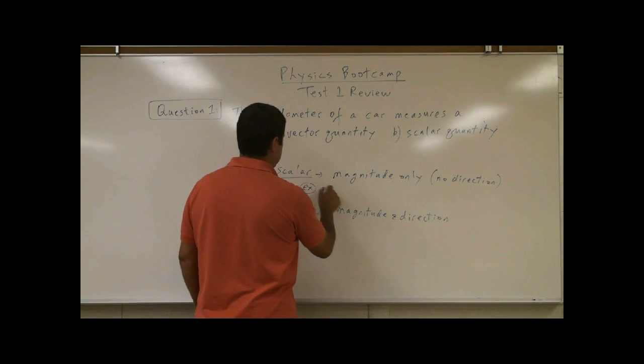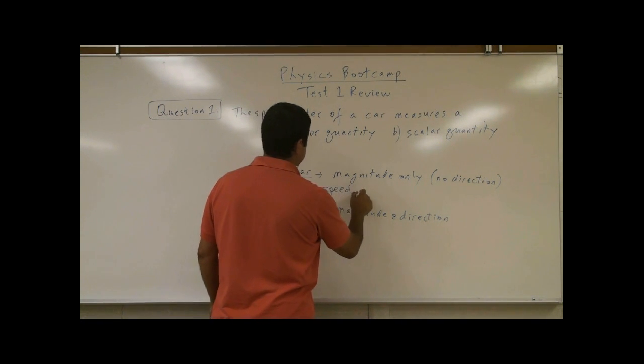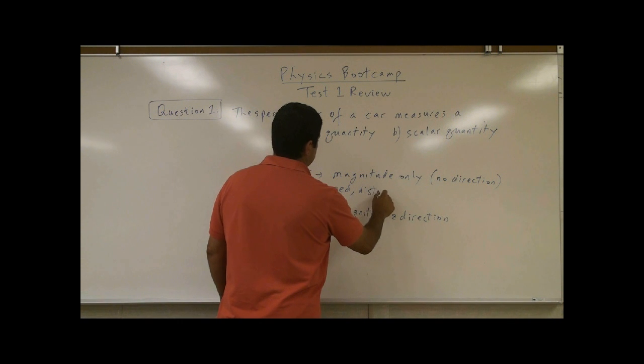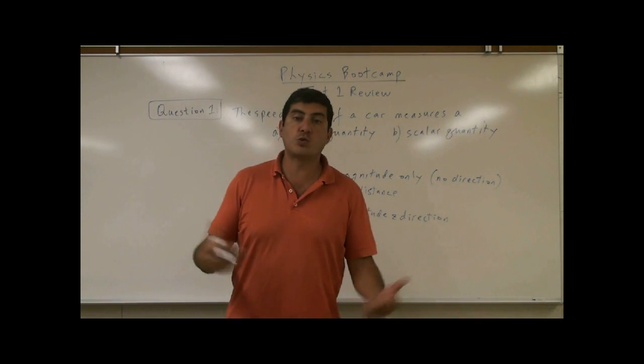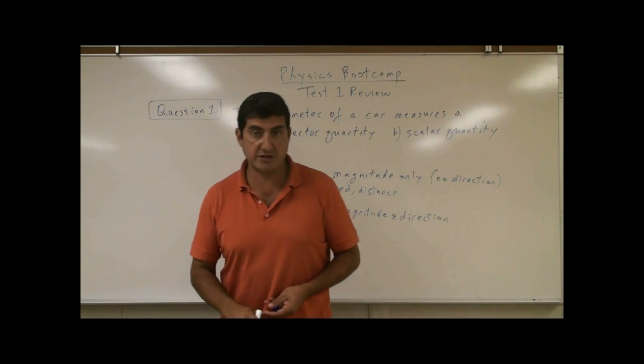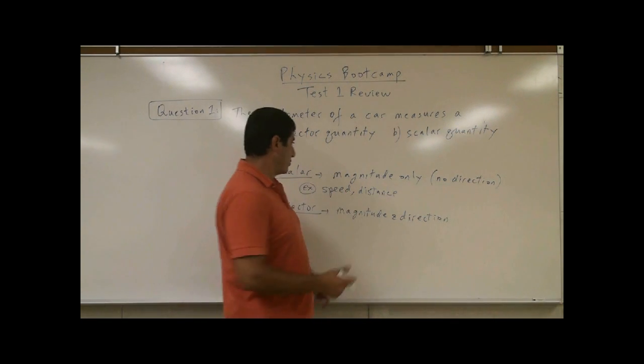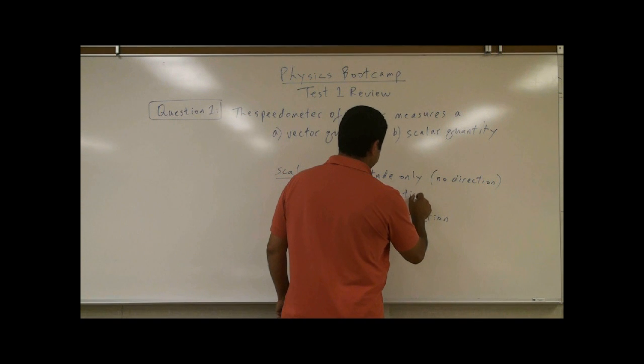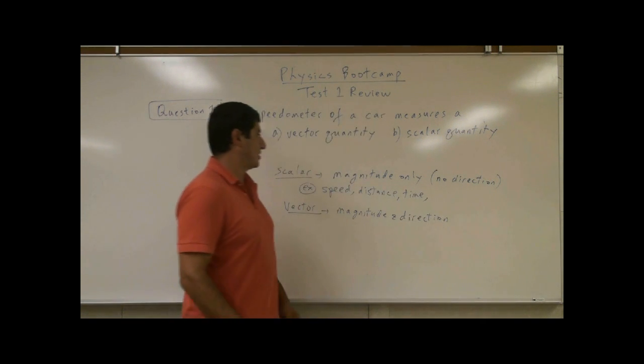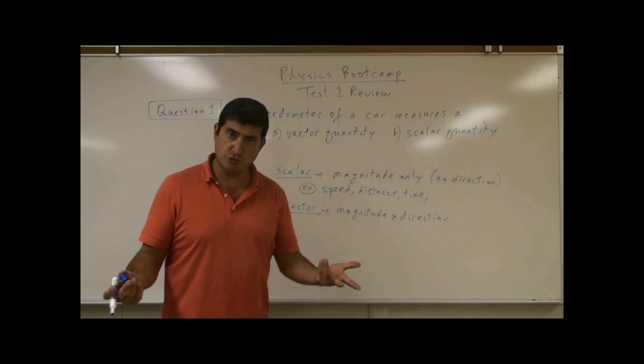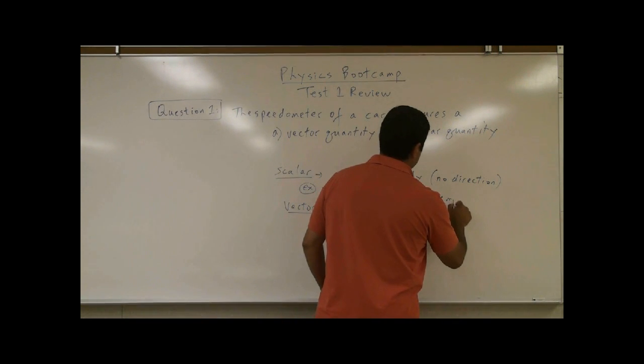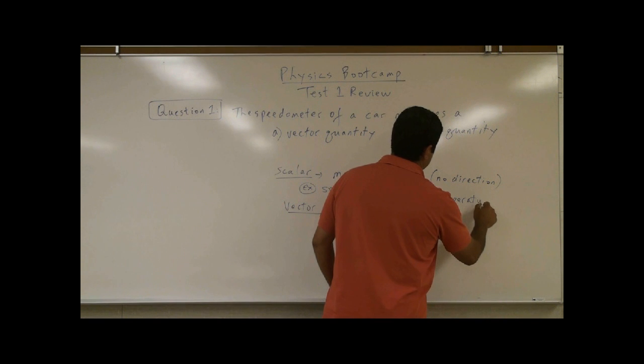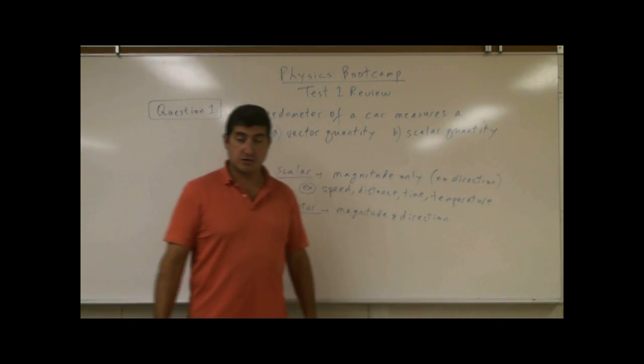Example would be speed, distance. If you travel a certain distance, you don't really care which direction you have traveled that distance. Time would be a scalar quantity, and temperature would be a scalar quantity, because temperature does not have direction to it.